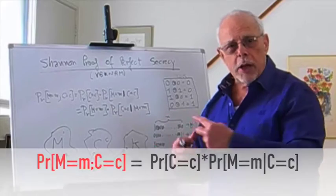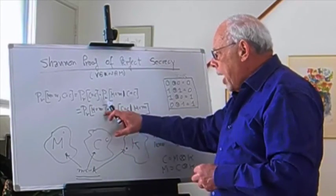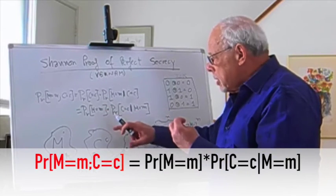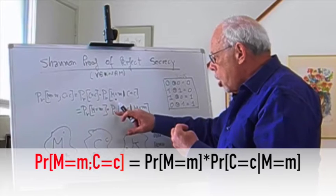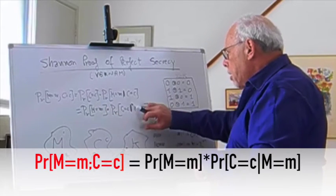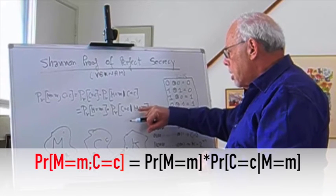But you can do it the other way around. You can ask yourself: what's the chance for the message to be m, and out of those cases, what is the chance that the ciphertext is c, given that the message is m? These two are the same.